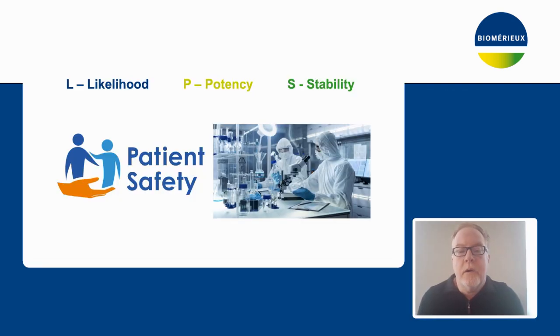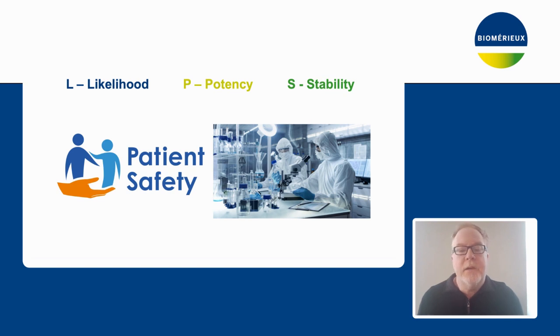So why the focus on endotoxin in pharma manufacturing? An easy way to remember the properties of endotoxin is the acronym LPS, where L is the likelihood of occurrence, P is the potency relative to other contaminants, and S is the very stable nature of endotoxin, which includes high resistance to heat.